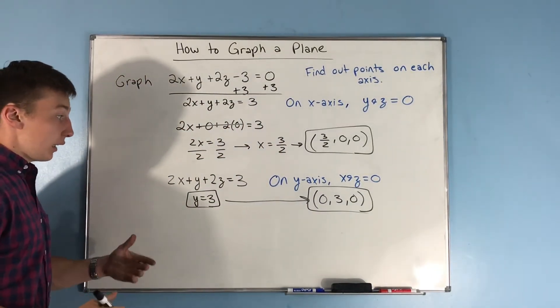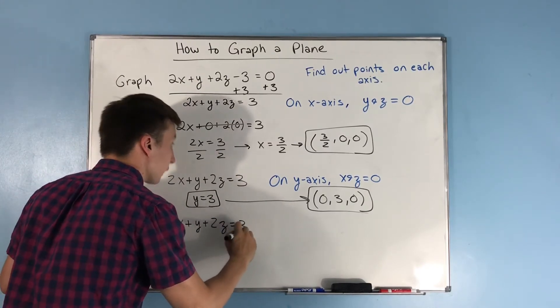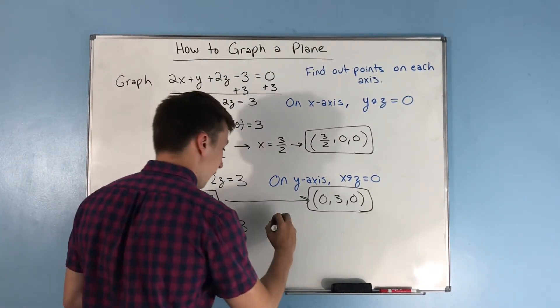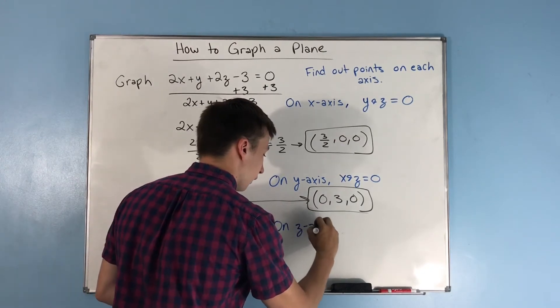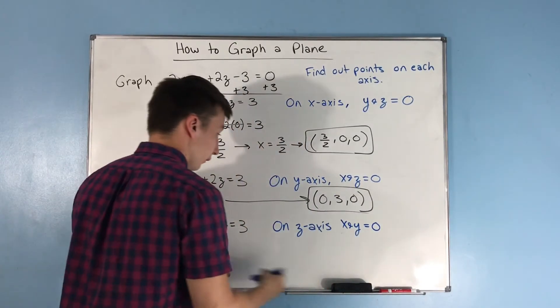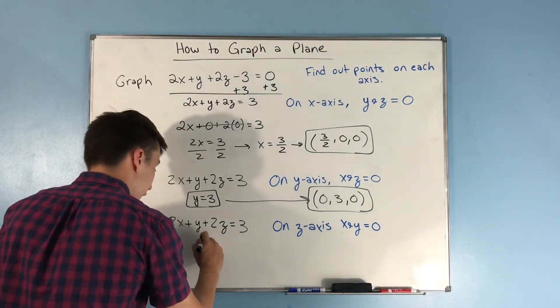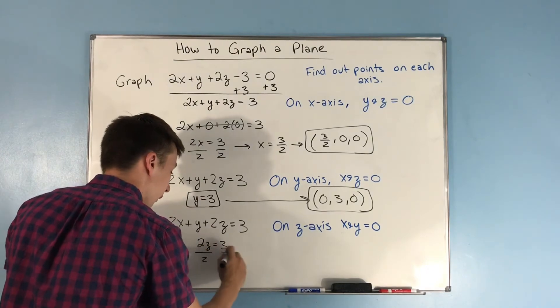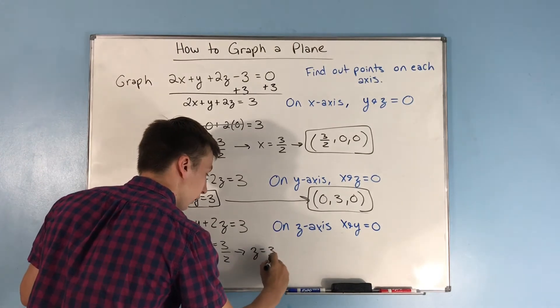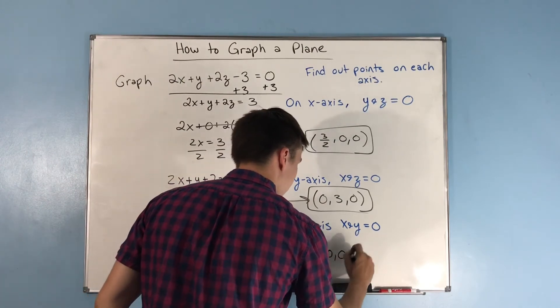Lastly, let's write our equation again, 2x plus y plus 2z equals 3, and we need to find the point on our z-axis. On the z-axis, we know that x and y are equal to 0. So let's set x and y equal to 0, and we get that 2z equals 3, divide by 2, and we get that z equals 3 halves. So we can now form our third point, which is (0, 0, 3/2).